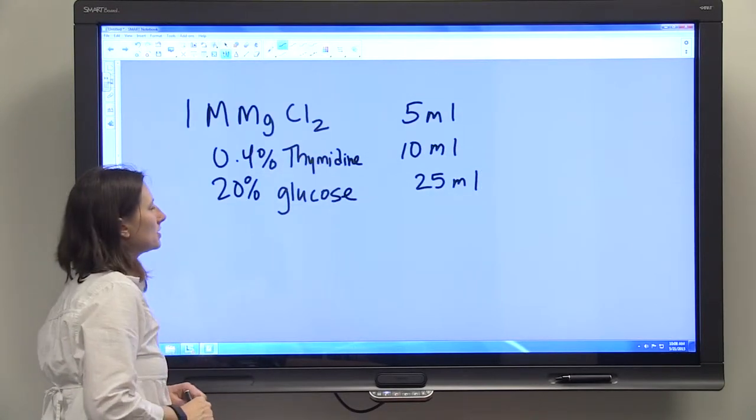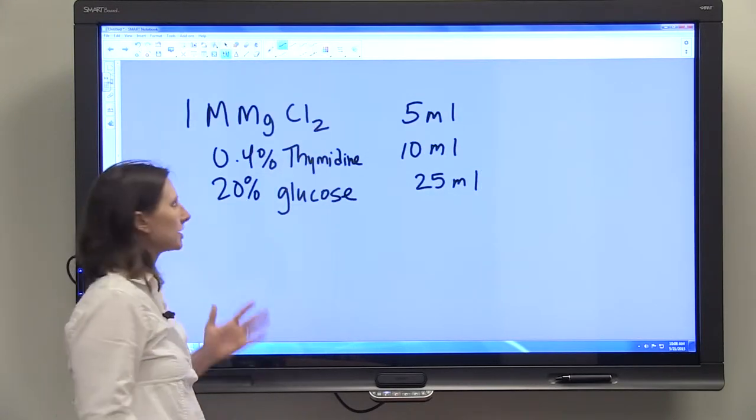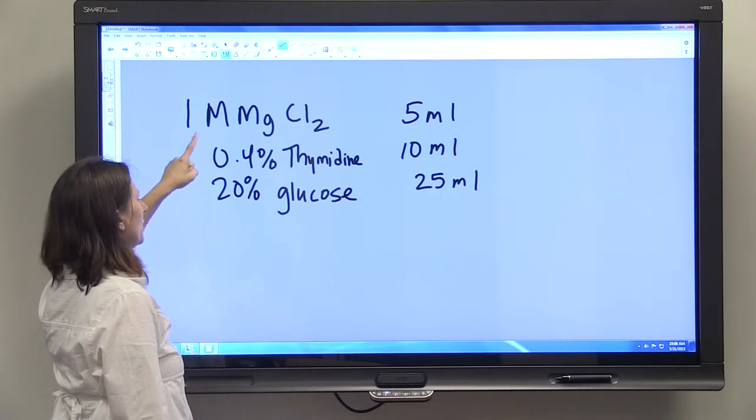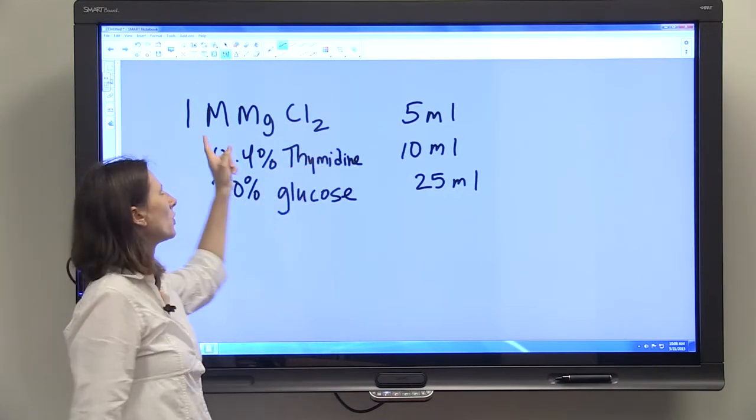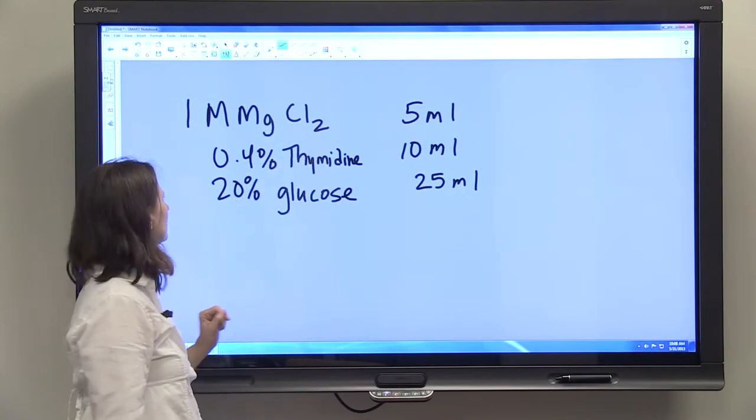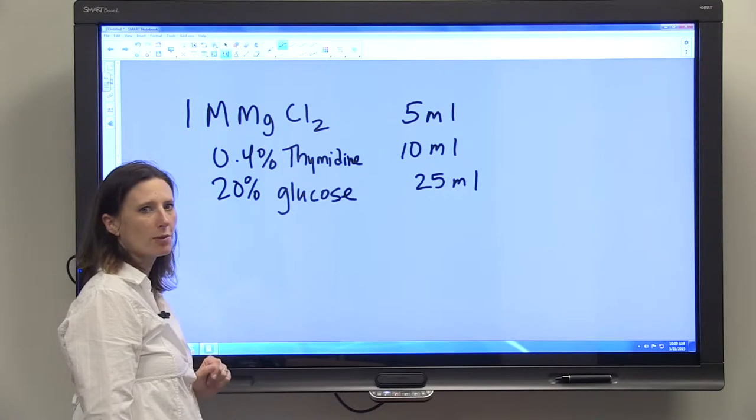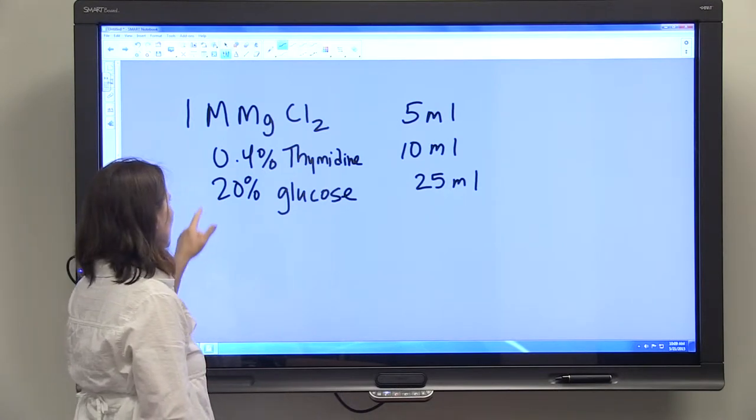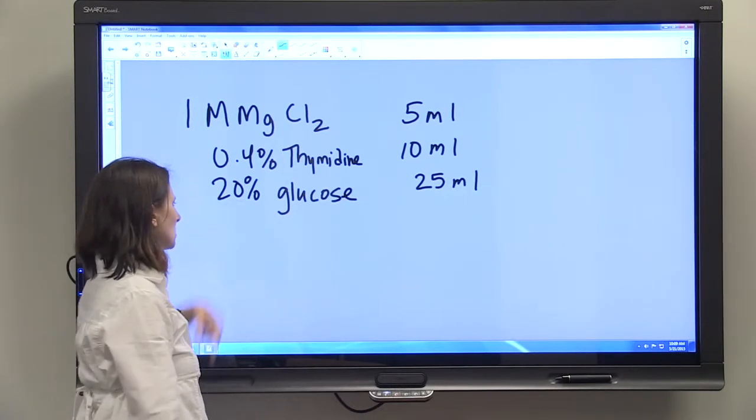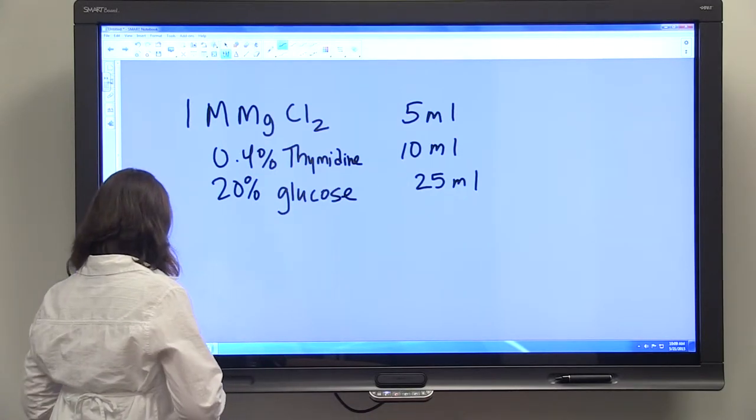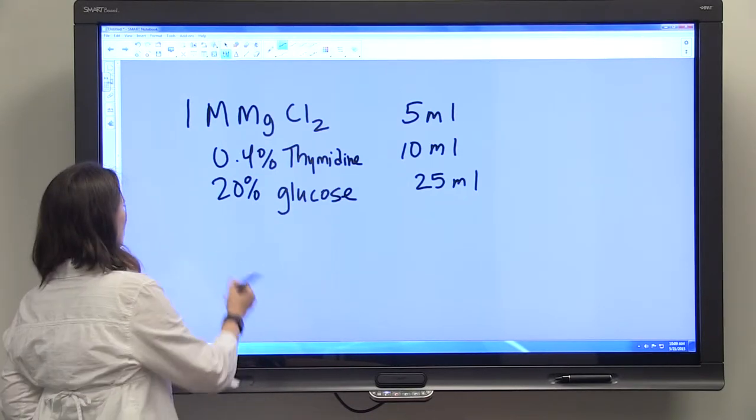One example of how a protocol might look is it might tell you that you want 5 ml of a 1 molar magnesium chloride solution, 10 ml of a 0.4% thymidine solution, and 25 ml of a 20% glucose solution.